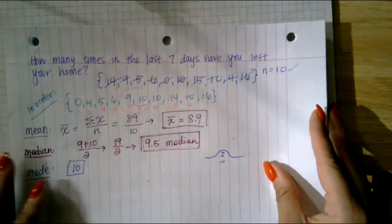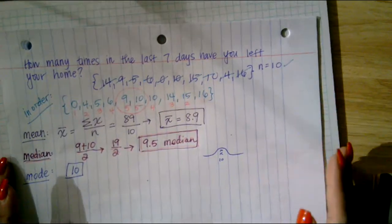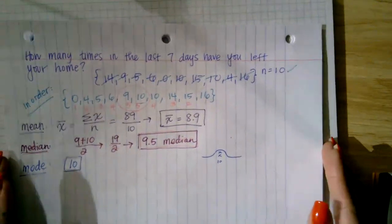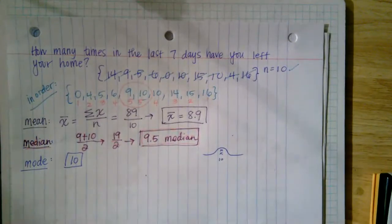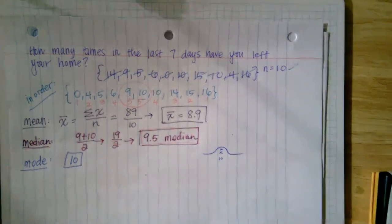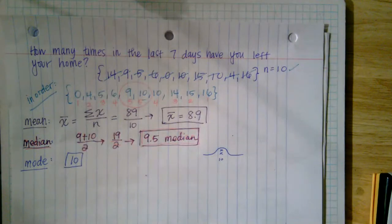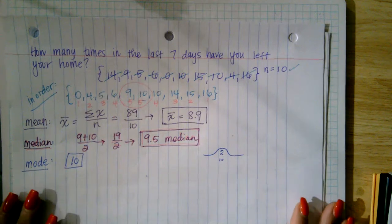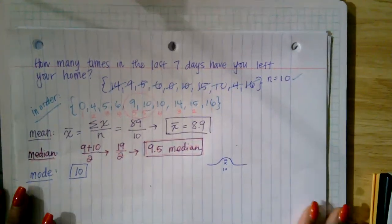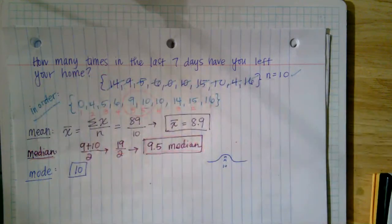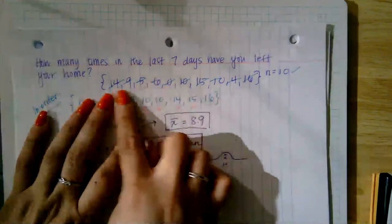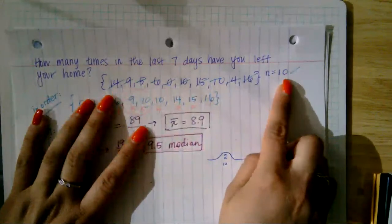Hi again, everybody. I'm going to give a little overview of statistics for review and reference. I randomly asked 10 of my college students the following question during these coronavirus times: how many times in the last seven days have you left your home? I randomly chose 10 responses — that's my set number.